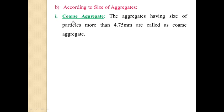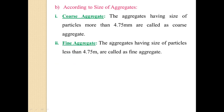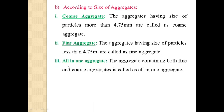Next is classification according to size of aggregate. It is classified as: firstly, coarse aggregate — aggregate having particle size more than 4.75 mm is called coarse aggregate. Next is fine aggregate — aggregate having particle size less than 4.75 mm is called fine aggregate. And next is all-in aggregate, which contains both fine and coarse aggregate, that is a combination of the two.